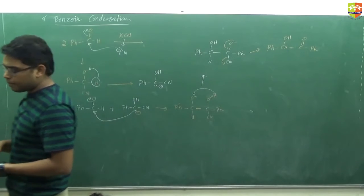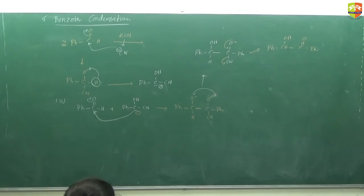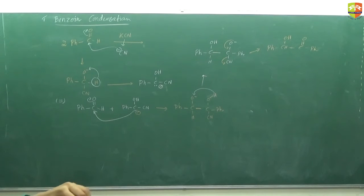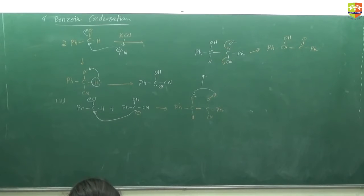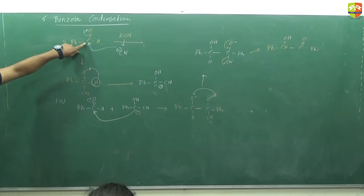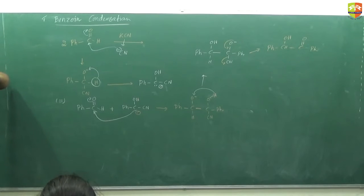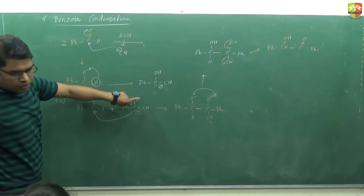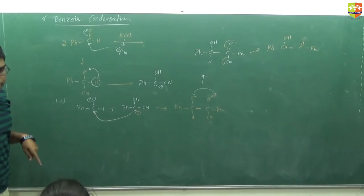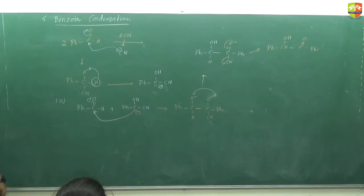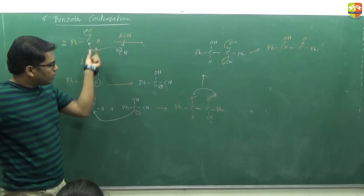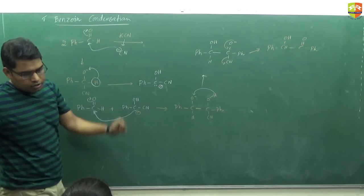So KCN behaves as a catalyst here — CN⁻ acts as a basic nucleophile. The concentration of CN⁻ does not change. If you change the reagent, say you use KOH instead, a similar kind of reaction would occur with the same mechanism, but that reaction would not be called benzoin condensation. It is a named reaction, so the reagent and everything is fixed.